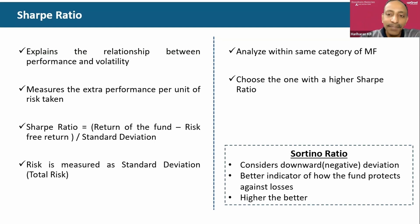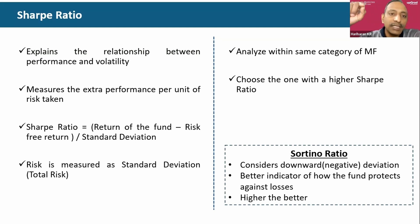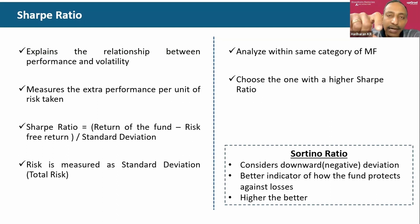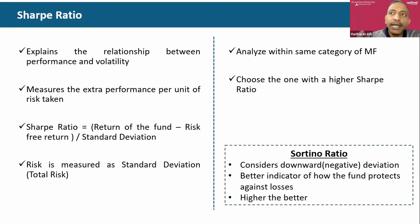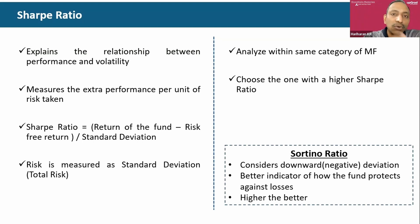There's another variation of Sharpe Ratio called the Sortino Ratio. Sortino is very similar in formula, but the only difference is that the denominator uses only downside standard deviation — where the fluctuations are on the negative side — instead of total standard deviation. This formula captures only negative-side deviations.